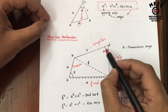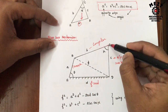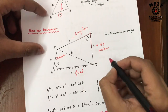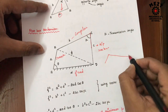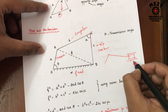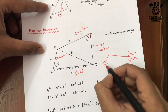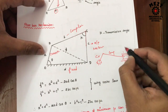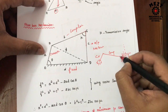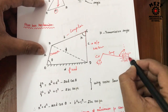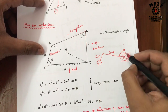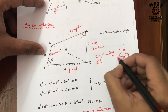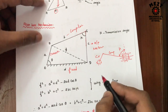The transmission angle is the angle between the coupler and the output link. For a slider-crank mechanism, the transmission angle is the angle between the coupler and the normal to the slider motion. If the slider is moving horizontally, we draw a perpendicular line and the angle between the coupler and that normal line is the transmission angle.